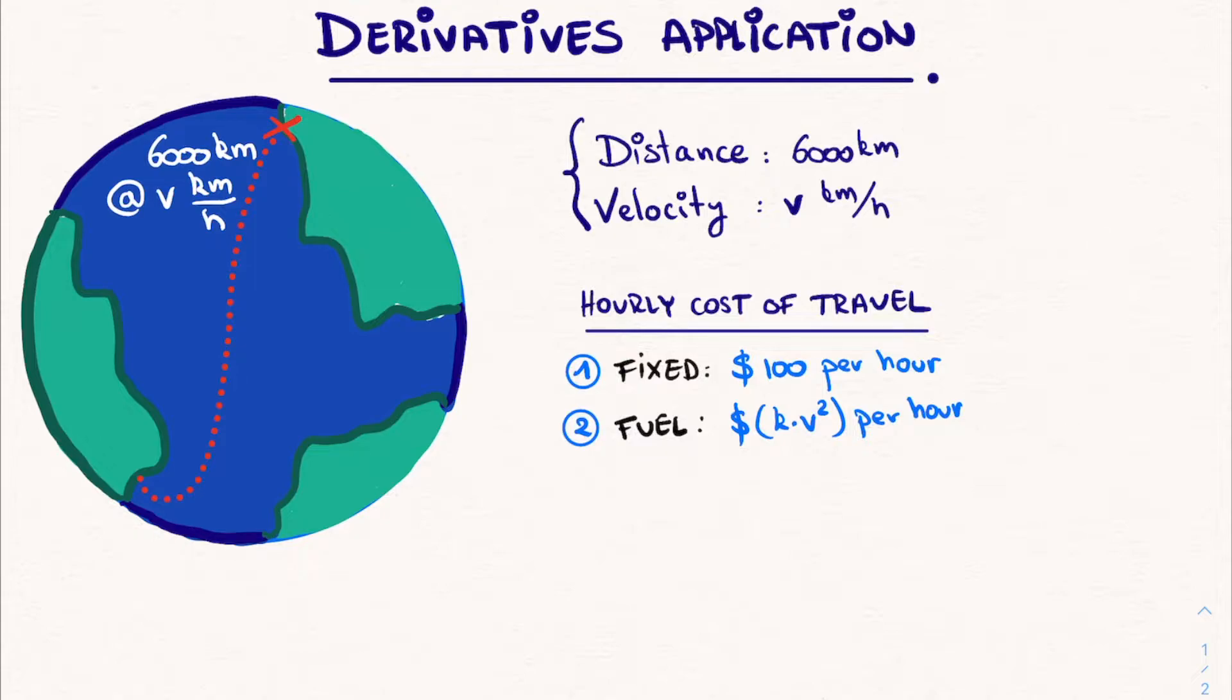Thus, we see that the cost of fuel increases when our velocity V increases. And this of course makes sense, because if you're traveling at a faster pace, your engine needs to output more power, which of course costs more fuel. Now, what if we want to know the total cost of the entire journey? Well, then we just multiply these hourly costs by the total amount of hours that the journey took to complete.